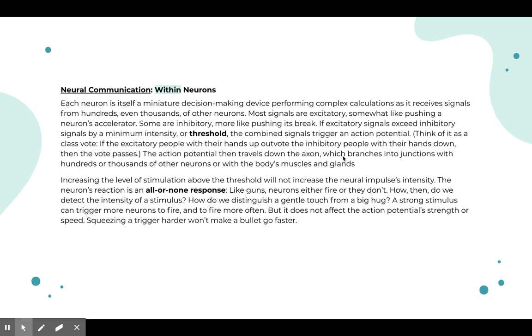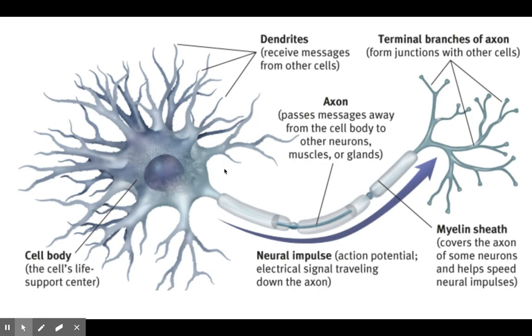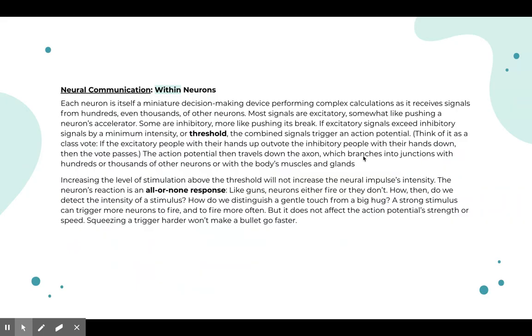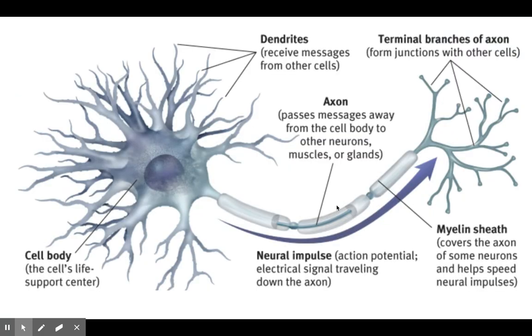The action potential then travels down the axon. So again, you're in the cell body, there's an action potential, it's going through the axon here, travels down the axon which branches into junctions with hundreds or thousands of other neurons, or with the body's muscles and glands. So it goes through here, and it might have a myelin sheath speeding it up. And then it goes here and it reaches these terminal branches, and it's going to go to other places so it can communicate something.